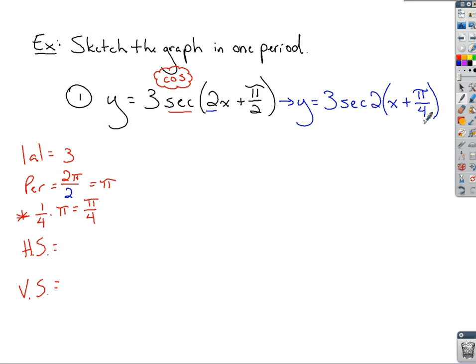Now, back to the shifts, you're finding these shifts still. What's the horizontal shift going to be? You've got to have the factored form for that one. Negative π over 4. You've got to change the sign. And vertical shift is going to be 0. There's nothing added or subtracted to the front.